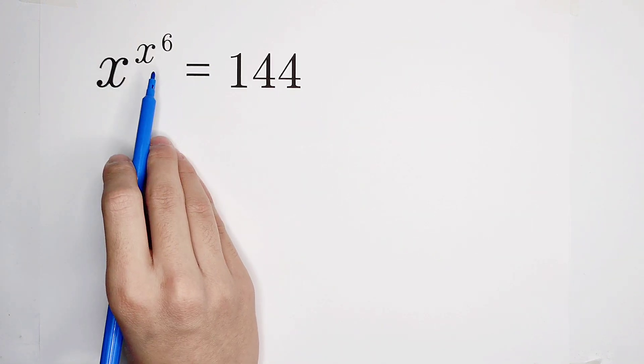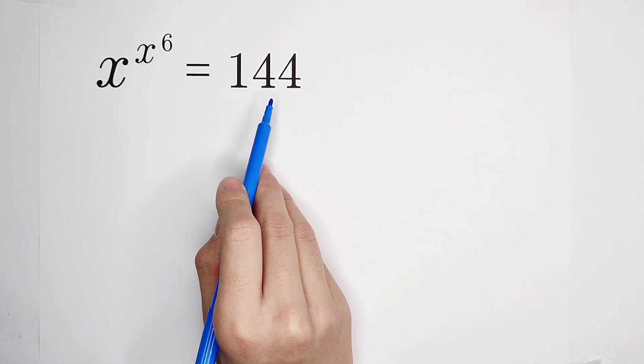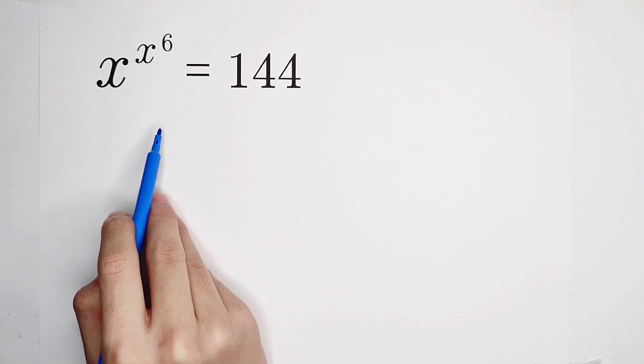x to the power of x to the power of 6 equals 144. How should I solve for x? Have a look at the left-hand side.